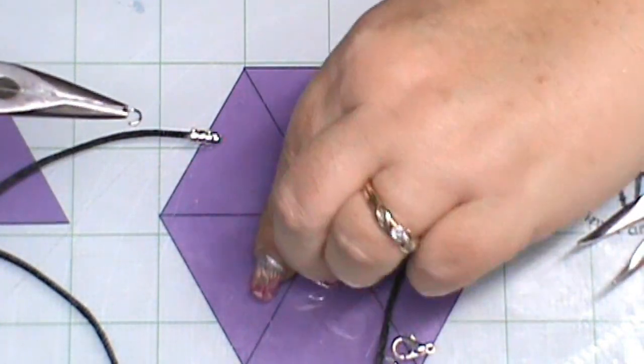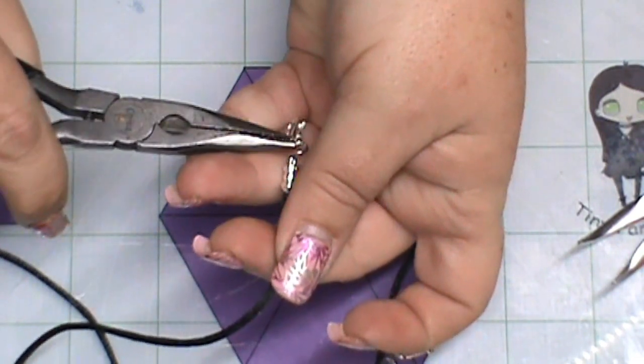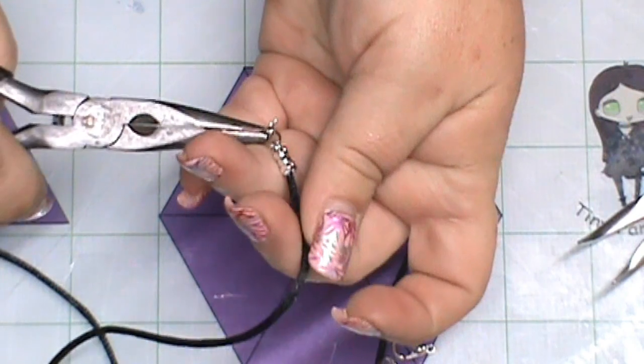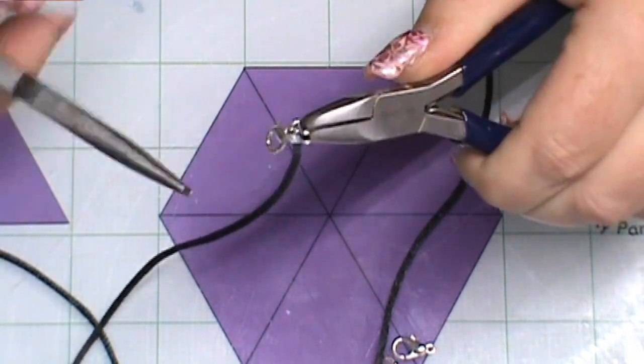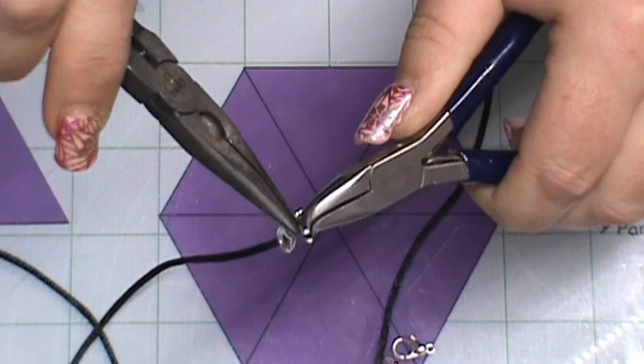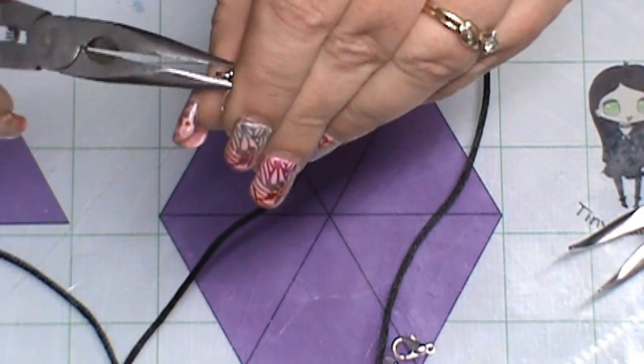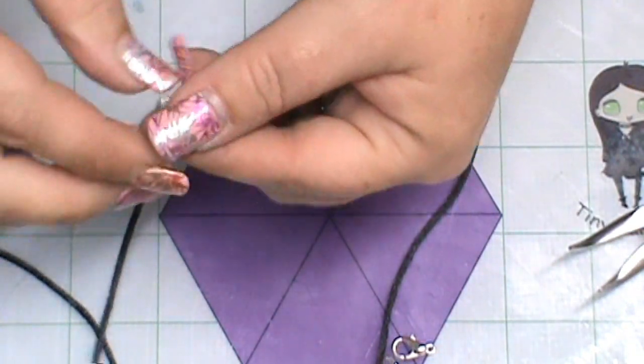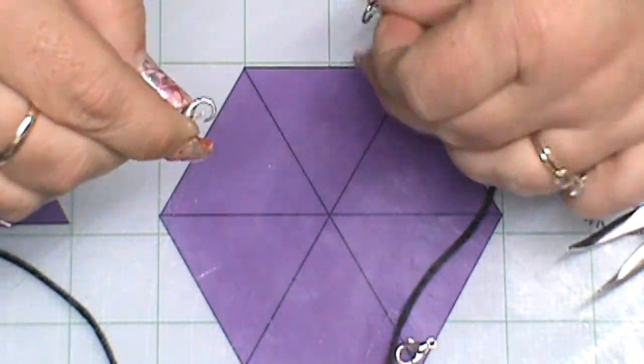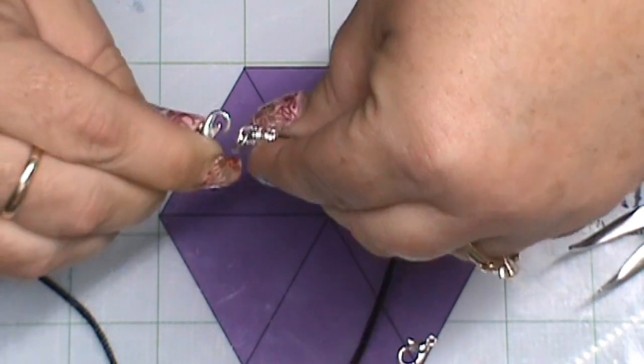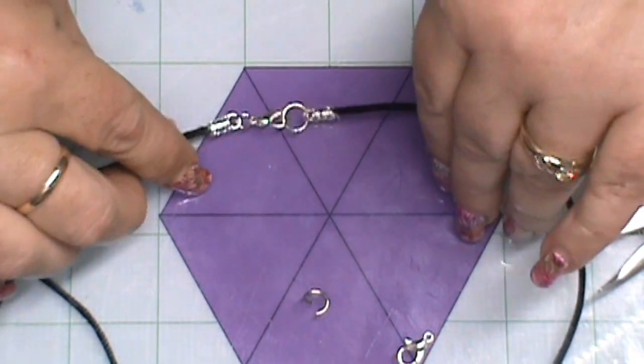And then I have 4mm. Twist it open. Put my claw clasp on there. Hook it in. And then close it up. Making sure it's good and closed. There we go. And voila. There we go. All done. And I'll do that with my next one.